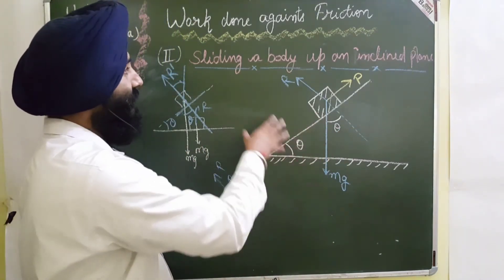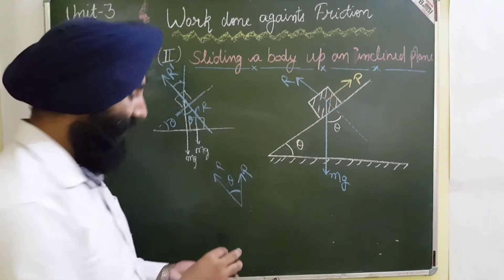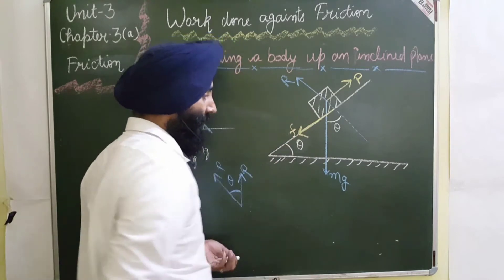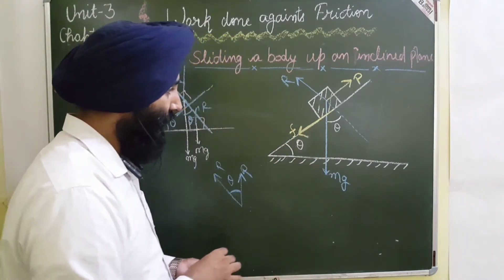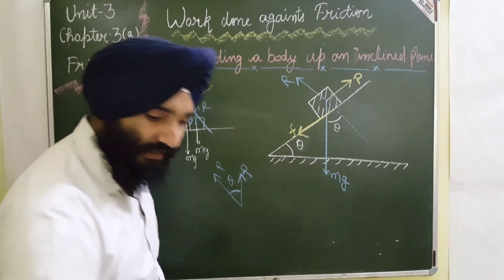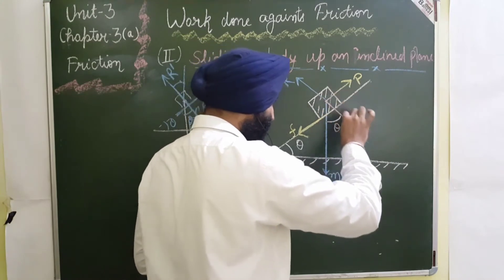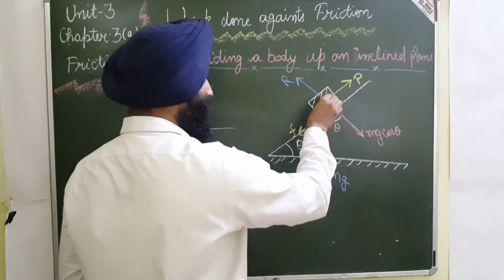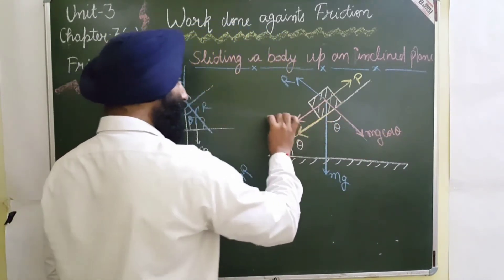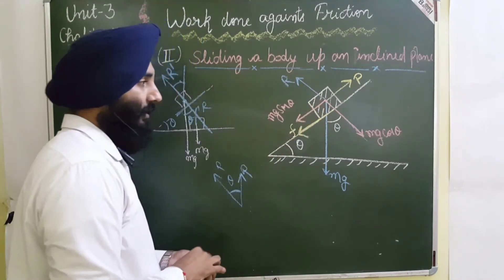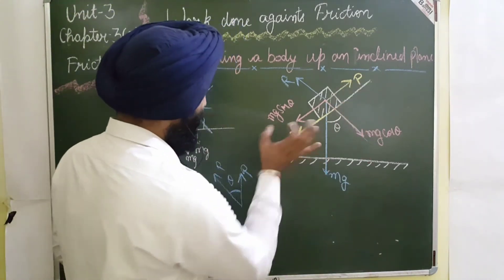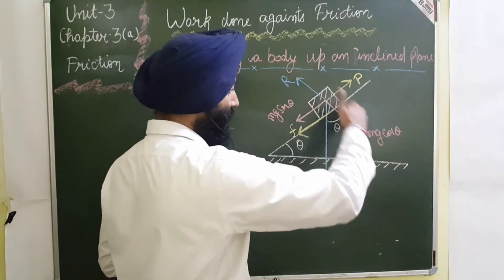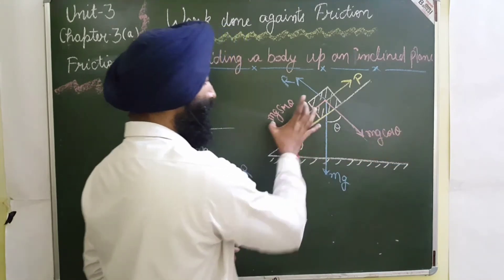Now we discuss the case where we are sliding the body in the upward direction. There is a frictional force opposing the motion in the opposite direction. The weight of the body is Mg. I resolve Mg into two components: one in the direction of R, which is Mg cos θ, and one along the incline, which is Mg sin θ.